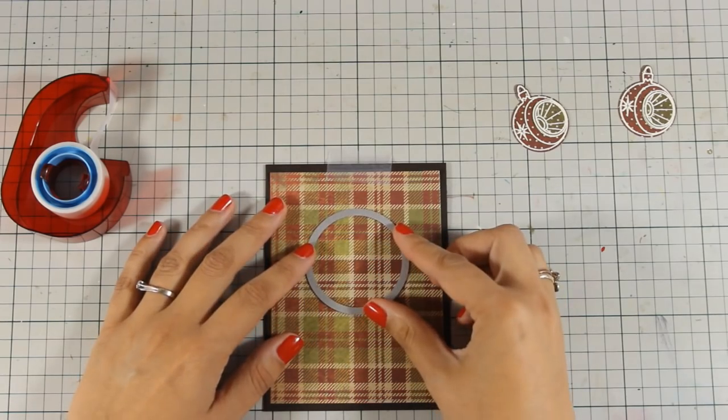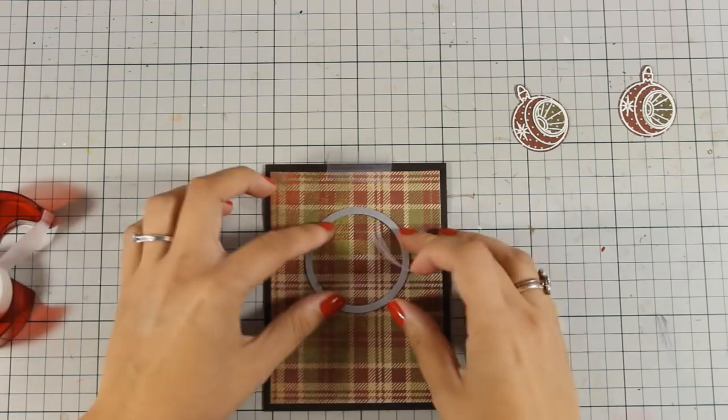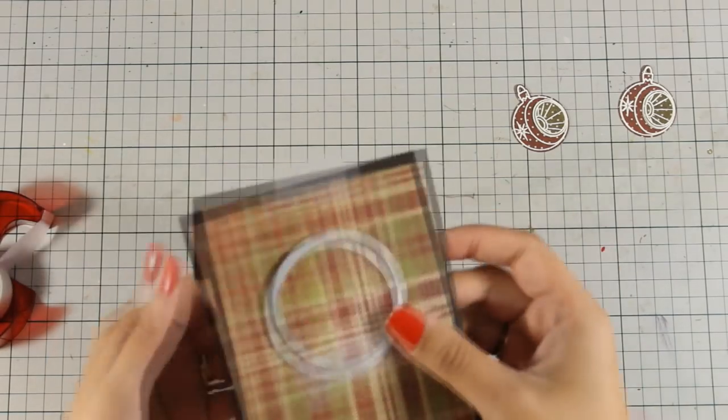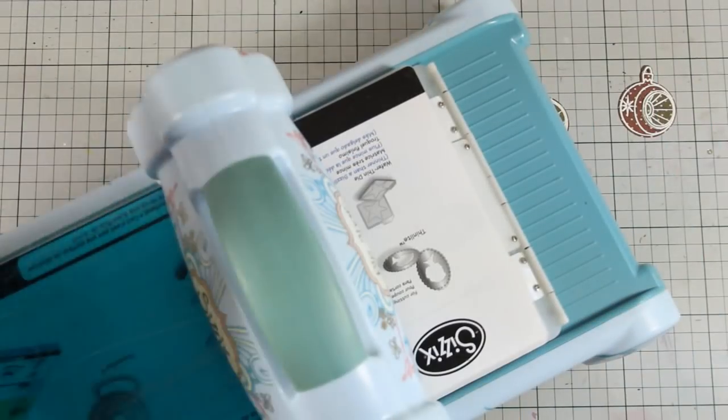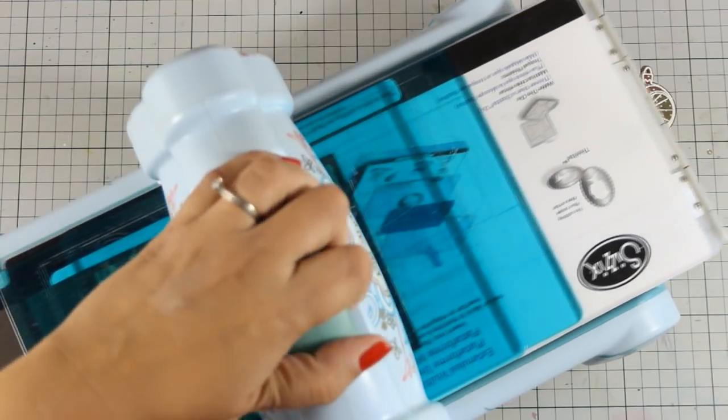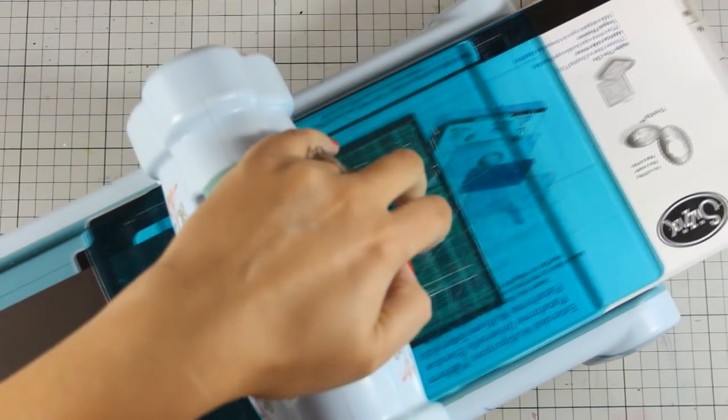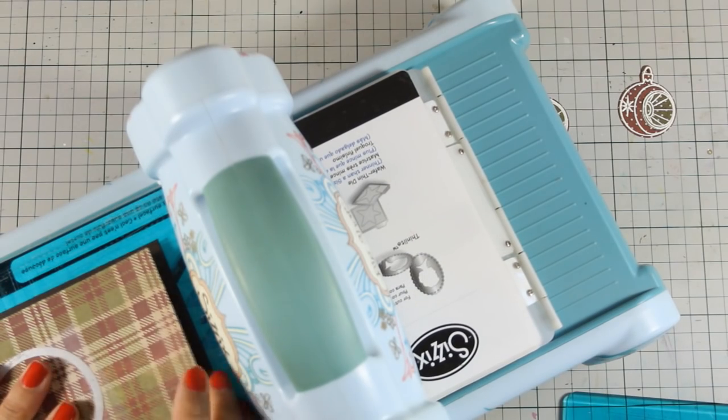Notice that I haven't stuck down the paper. Now I am going to place the die on top and I am going to pass it through my Sizzix machine so with one pass I am going to cut out both the pattern paper and my card base. Also notice that I have opened up my card base so I am cutting only a hole on the front panel of the card base.